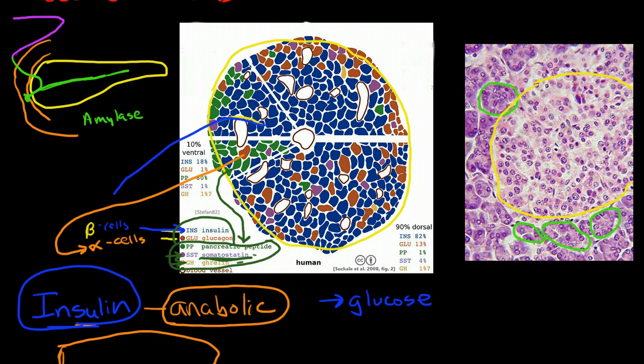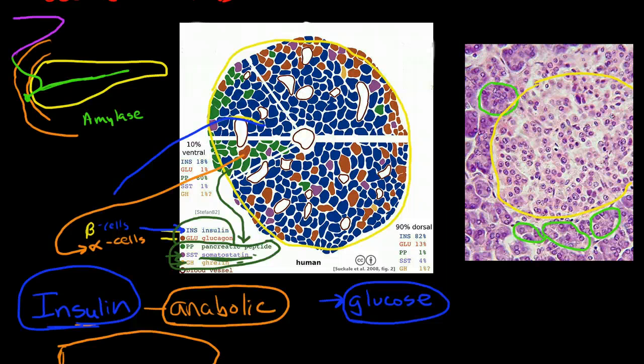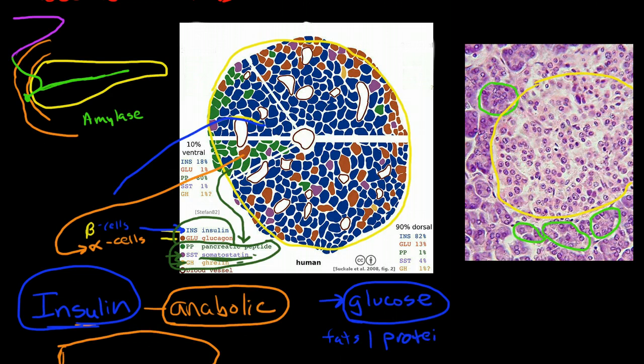Now interestingly enough though, insulin is a hormone that is important in the uptake of proteins and fats as well. It's just as important for fats and proteins, but without the presence of glucose, insulin is not going to get secreted. So fats and proteins will not be absorbed effectively by cells either.